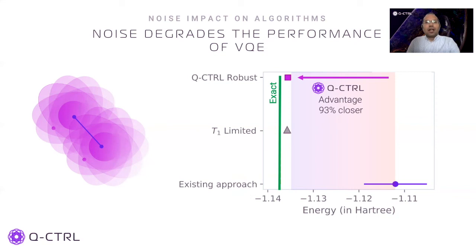When we run the VQE loop for the hydrogen molecule problem, we start noticing the impact of noise at the algorithm level. Using the existing approach with primitive pulses shows performance reduction with the noise — the minimum energy found is far away from the true energy, represented by the lowest point on the graph. Next, we look at a case where we run the simulations with T1 noise but no over-rotation noise — we call this the T1 limited case. The energy found by T1 limited VQE is very close to the true ground state energy. Next, we ran VQE with both kinds of noise and used the Q-Control robust pulse. The result is 93% closer to the true minima and matches the one found in the T1 limited case. We have thus verified that the Q-Control robust pulse completely suppresses the impact of over-rotation noise at the algorithm level.